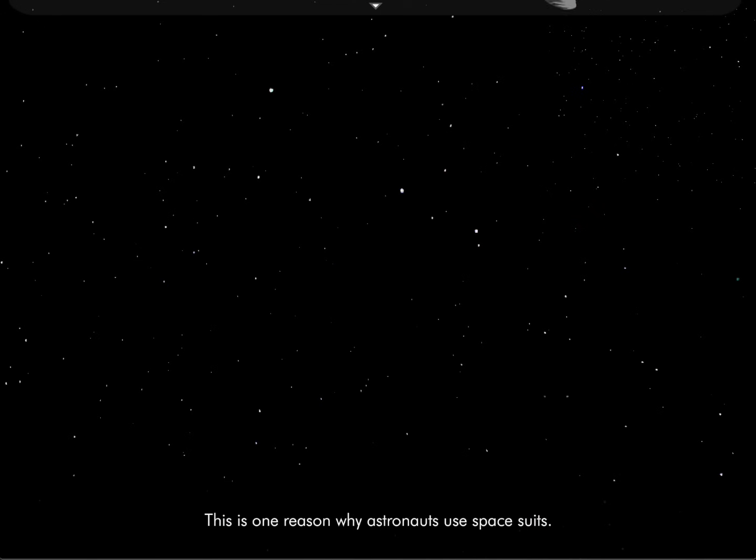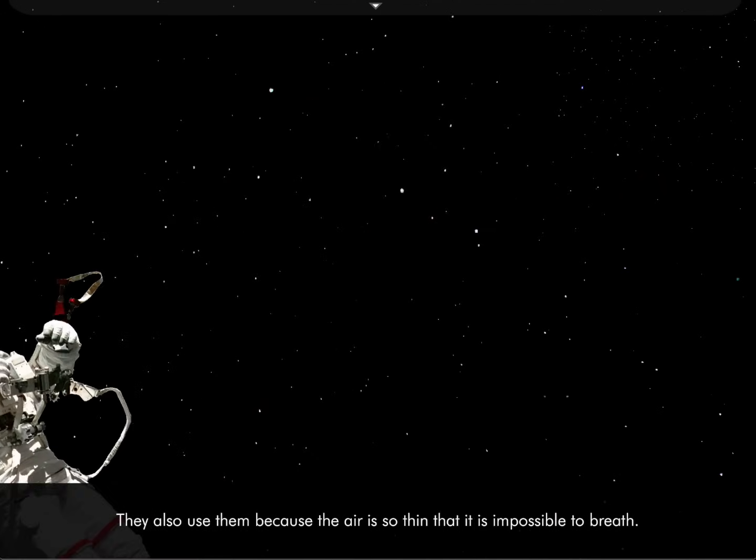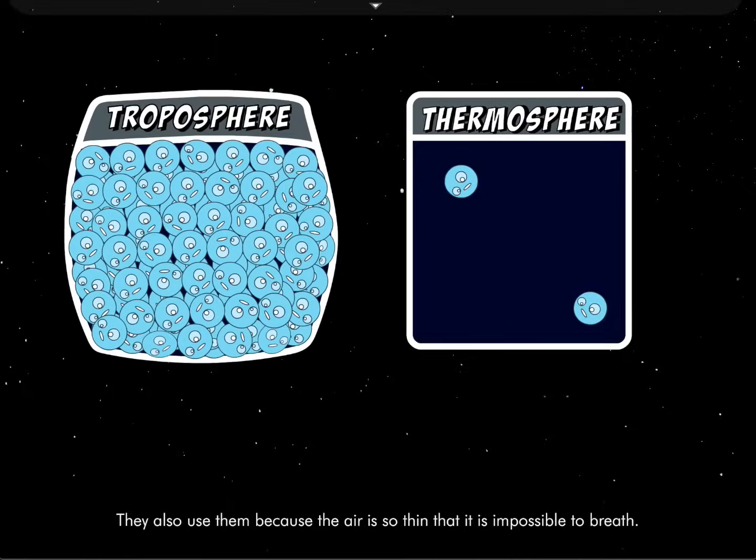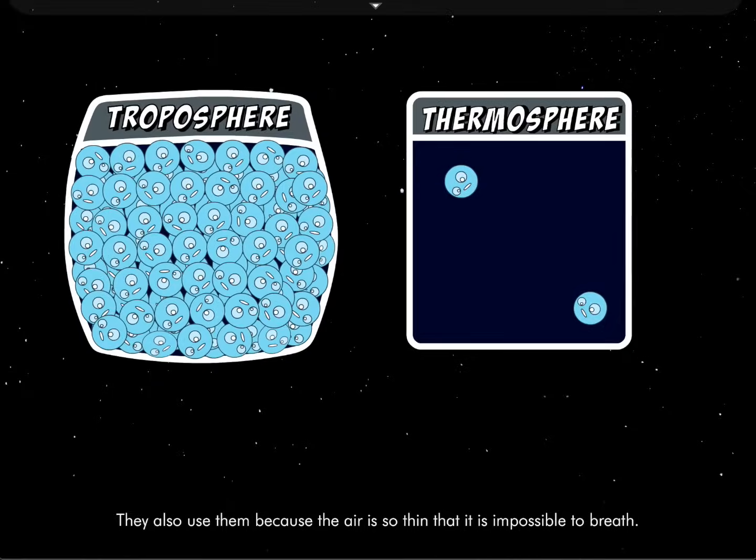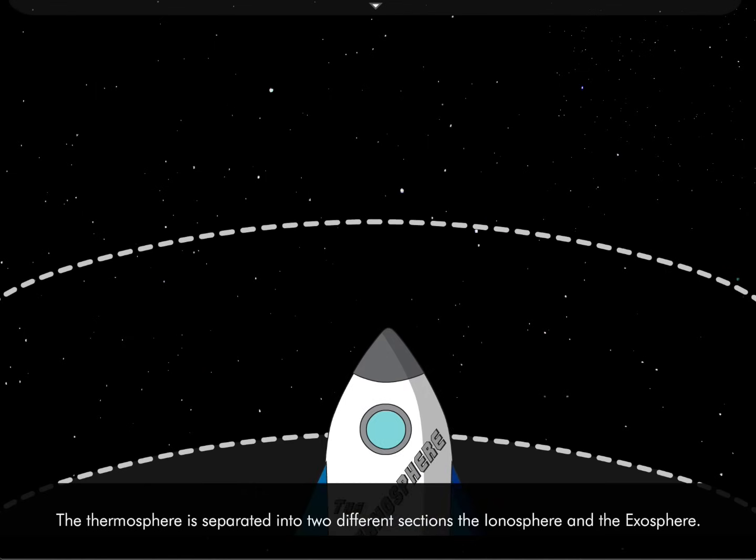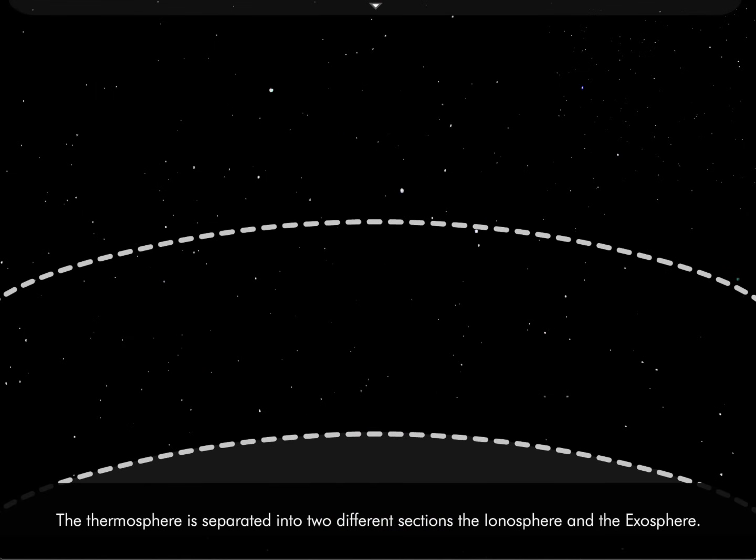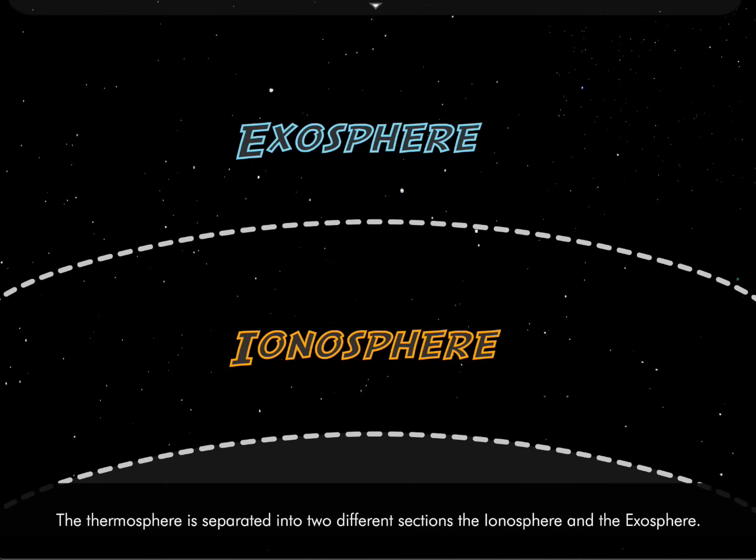This is one reason why astronauts use spacesuits. They also use them because the air is so thin it is impossible to breathe. The thermosphere is separated into two different sections, the ionosphere and the exosphere.